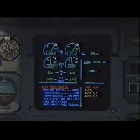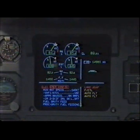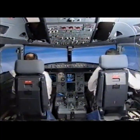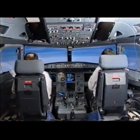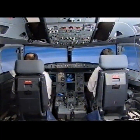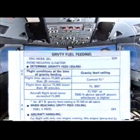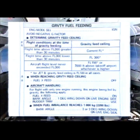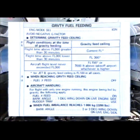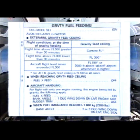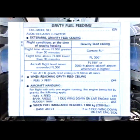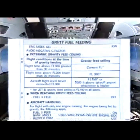Full gravity feed — procedure. Gravity fuel feeding — paper checklist. Engine mode selector — ignition. Ignition. Avoid negative G factor. Check. Determine gravity feed ceiling. It's determined. Gravity fuel feeding paper checklist complete.